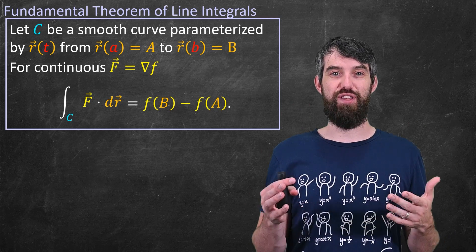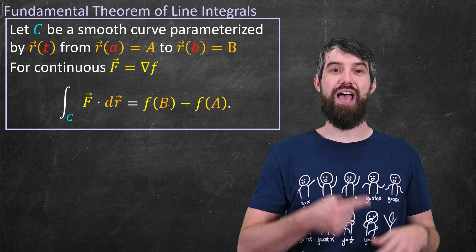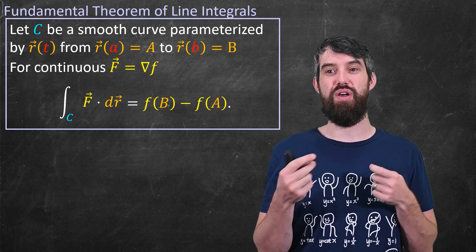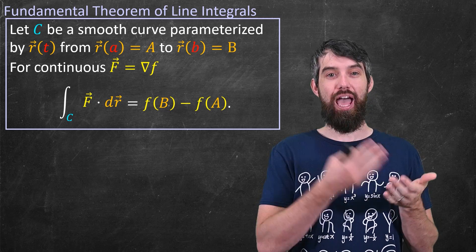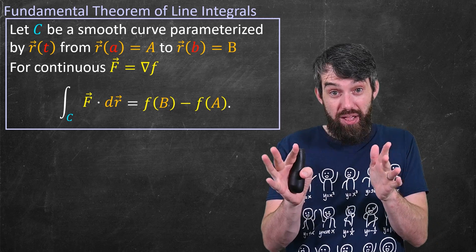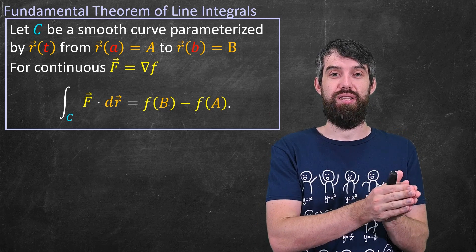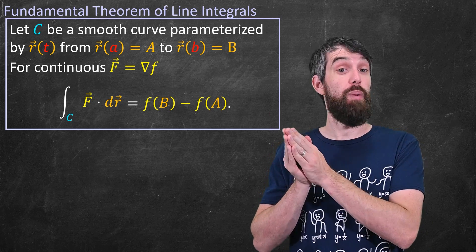So looking at the theorem one more time in its full glory, we have that the integral along curve of F dot dr is just equal to f(B) minus f(A) when the field can be written as the gradient of some potential function, the gradient of some little f.